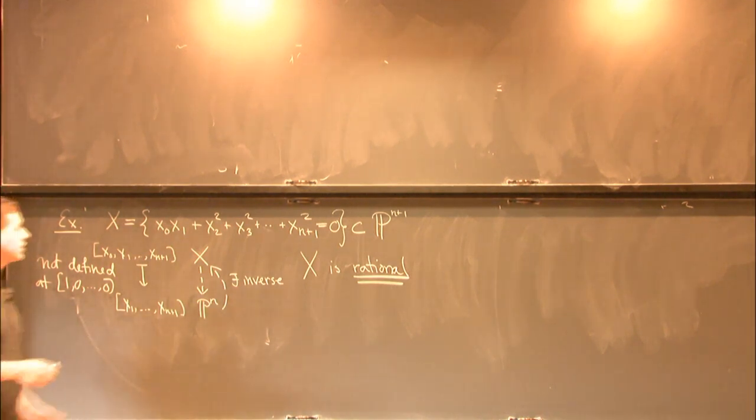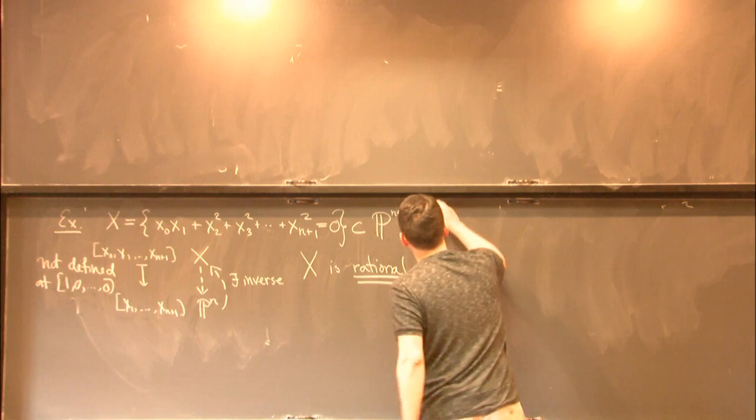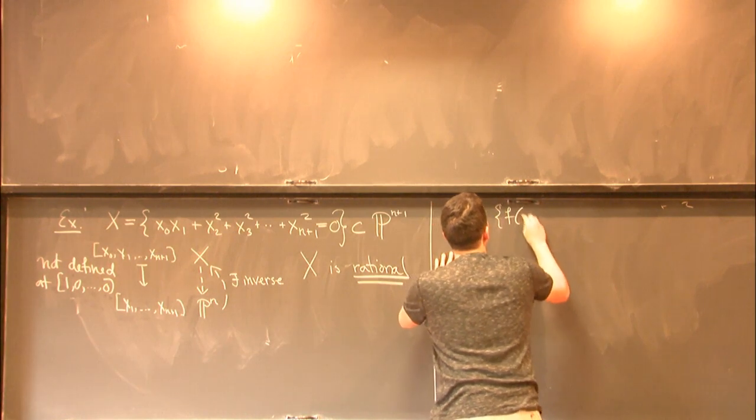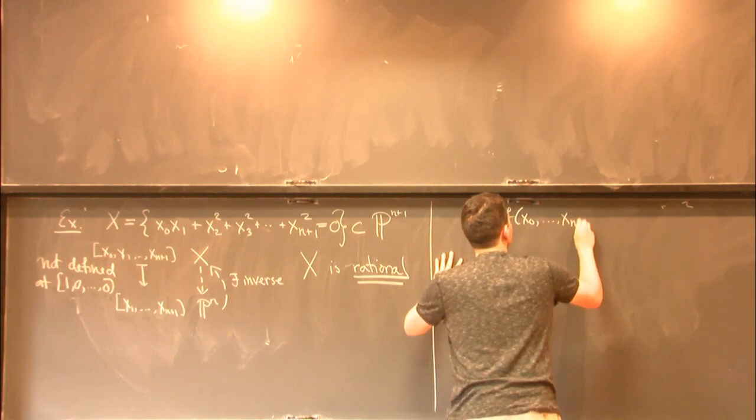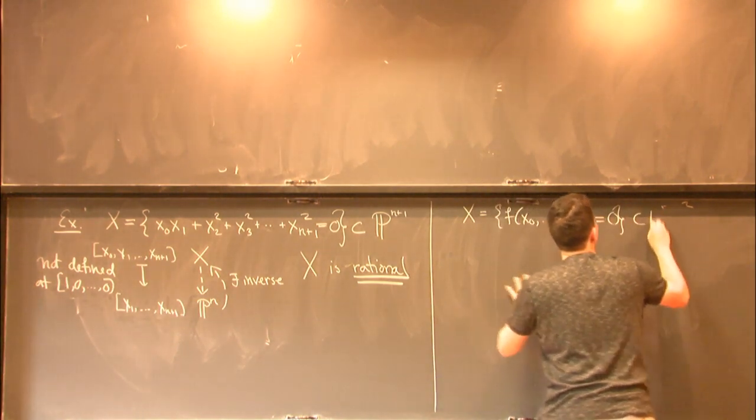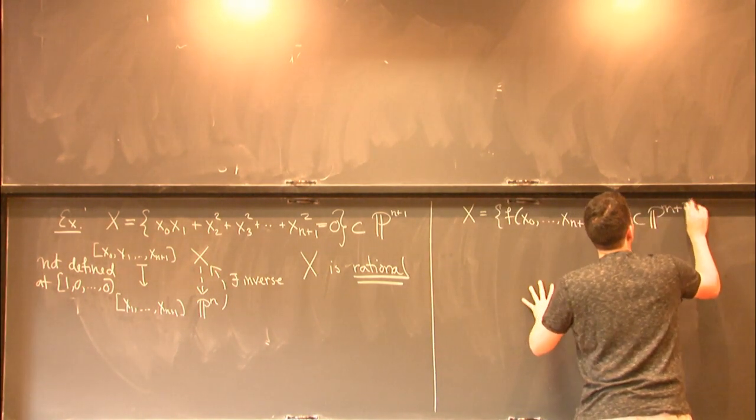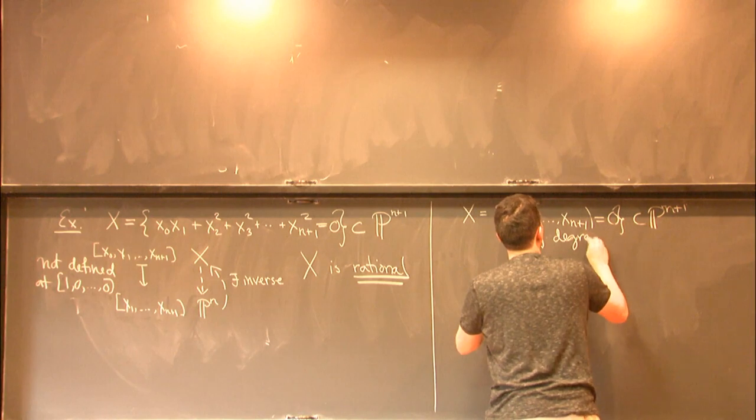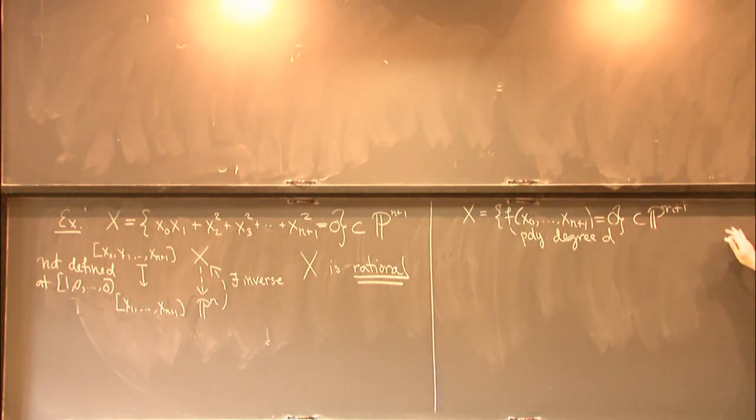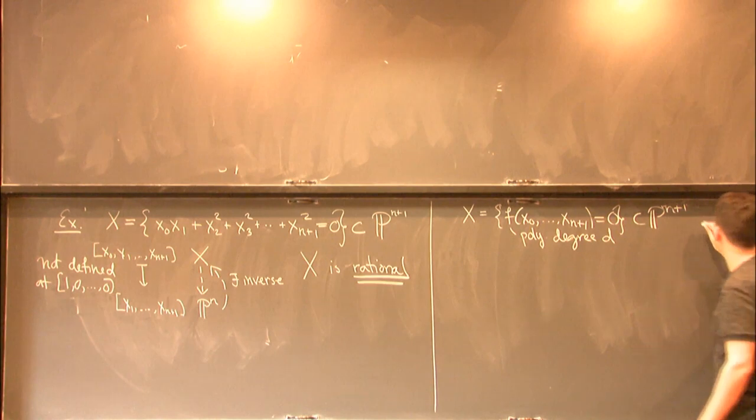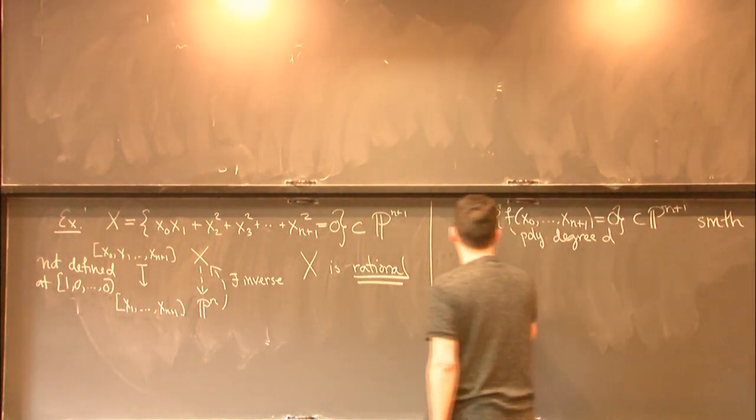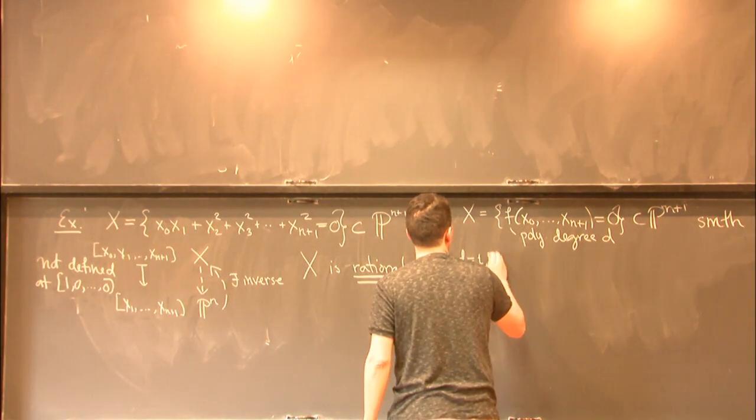And maybe I can just briefly summarize what happens for hypersurfaces of higher degree. So let's say x is now the vanishing locus of a polynomial f, again in the same projective space, where here this f is a polynomial of degree d. And also, let me assume that this hypersurface is smooth. So explicitly, that just means there's no point where all the partial derivatives vanish of this polynomial. So then you can ask about the rationality of this x.